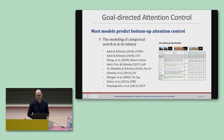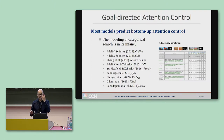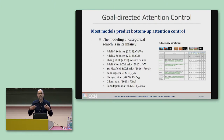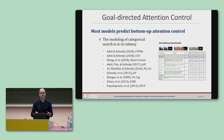Another big reason is because there just aren't many datasets of categorical search, and those that do exist all suffer from one problem or another. This is important because, as you can see from the saliency benchmark, all the best models of free-viewing prediction are now deep networks, and these models require large datasets of free-viewing behavior for training. Nothing like this will ever exist for goal-directed attention — that is, until now.